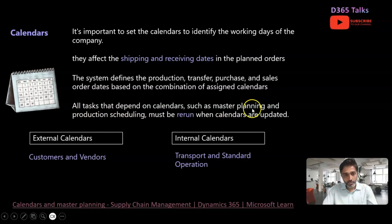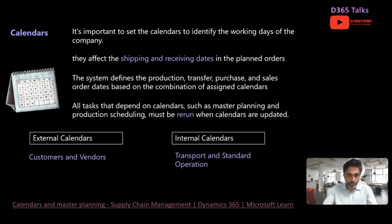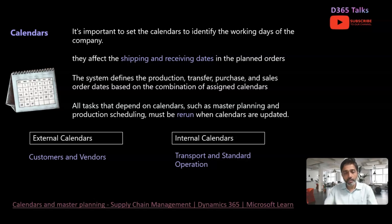All tasks that depend on calendars — such as master planning and production scheduling — must be rerun when calendars are updated. For example, when updating calendars for annual festival holidays or planned occasions in your organization, you need to revise the calendar and then rerun master planning in order to get the appropriate working times and generate the correct shipping and receipt dates. This is typically done on an annual basis.